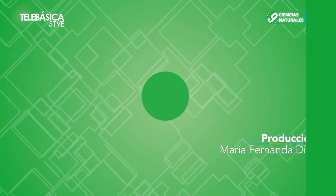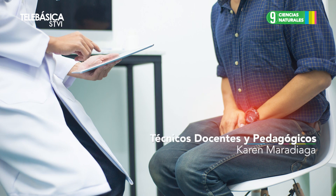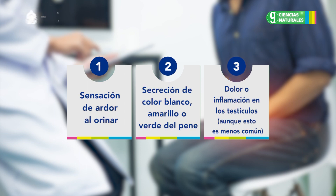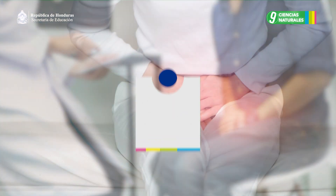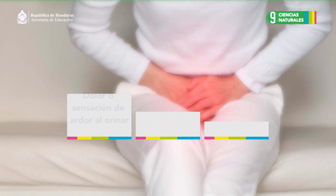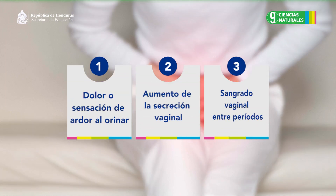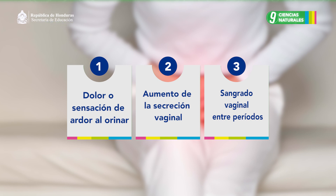En la mayoría de los casos no presentan síntomas visibles. En algún momento, en los hombres se puede mostrar de esta manera: sensación de ardor al orinar, secreción de color blanco, amarillo o verde del pene, dolor o inflamación en los testículos, aunque esto es menos común. En las mujeres, los síntomas pueden ser: dolor o sensación de ardor al orinar, aumento de la secreción vaginal, sangrado vaginal entre periodos.